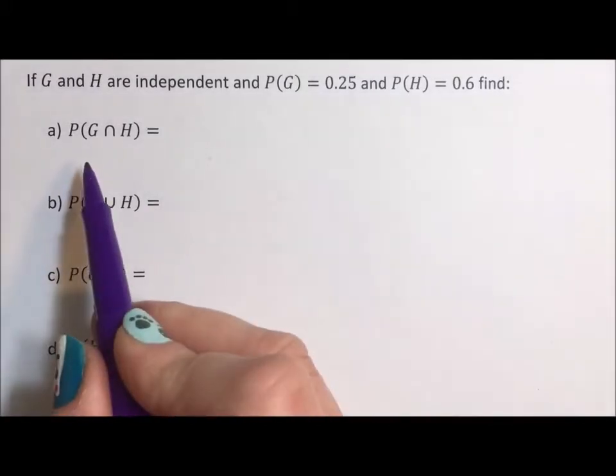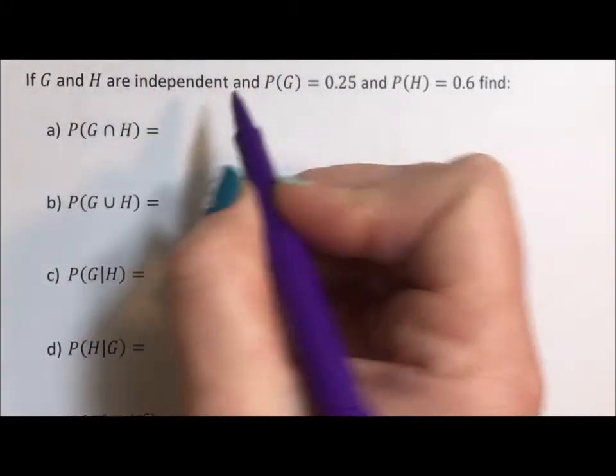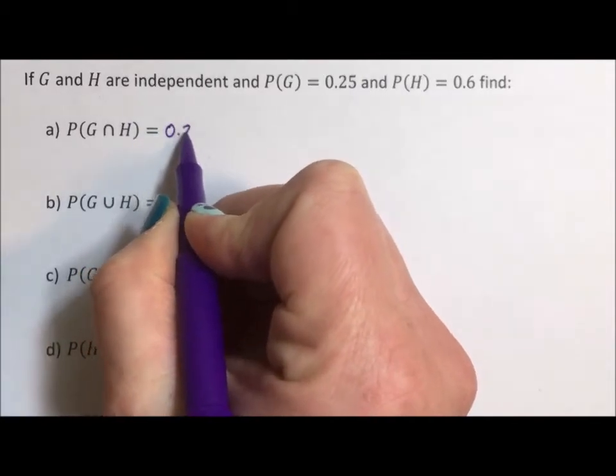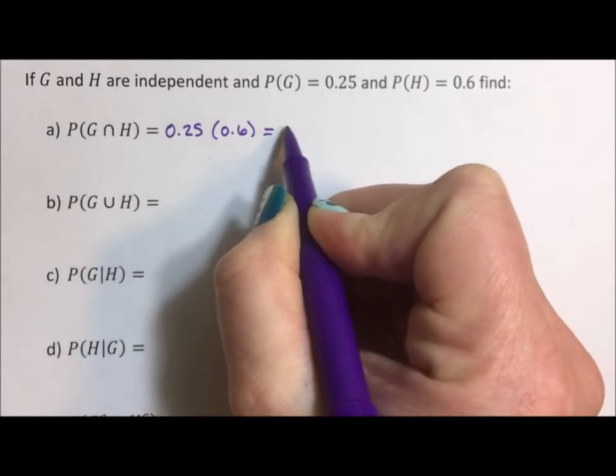All right, so to find the intersection of the two we need to multiply, because that's what independent means. 0.25 times 0.6 is 0.15.